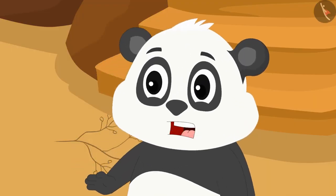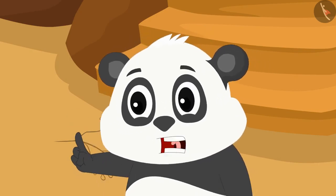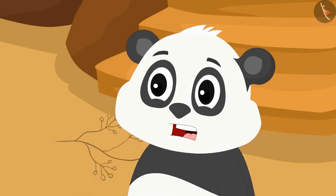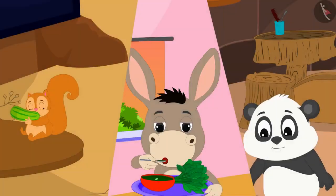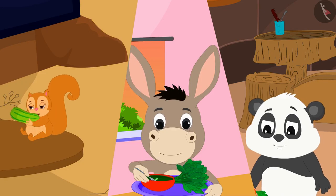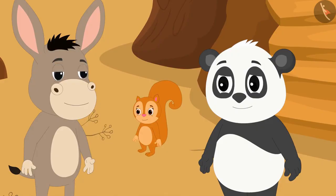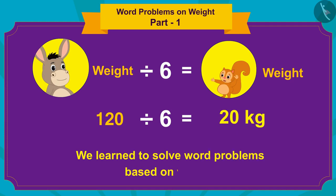'The three of us have gained so much weight. From now on we will eat only nutritious things and completely stop visiting the fast food stalls,' Golu told Bola and Chanda. The three friends started eating nutritious things and slowly they started losing weight. Children, in this video we learned to solve word problems based on weight. In the next video we will see some more interesting examples.